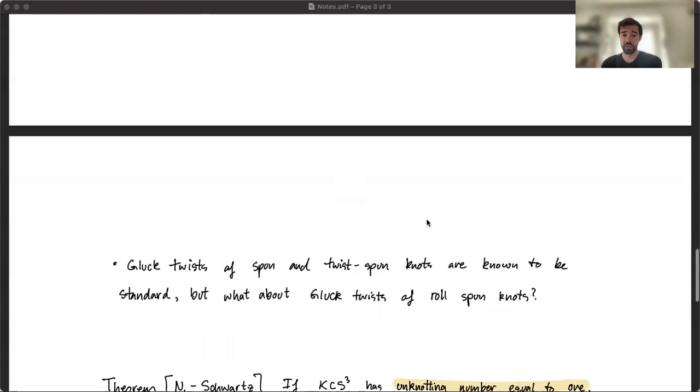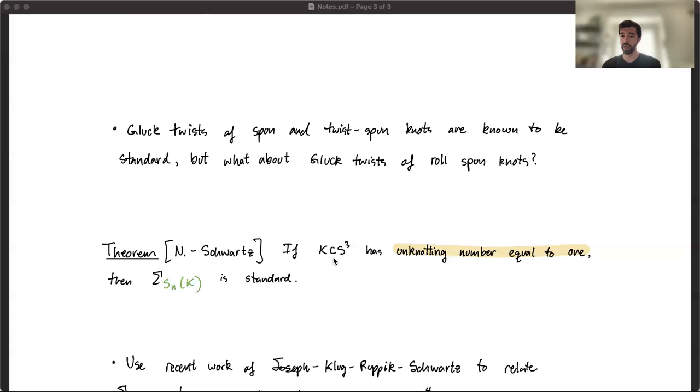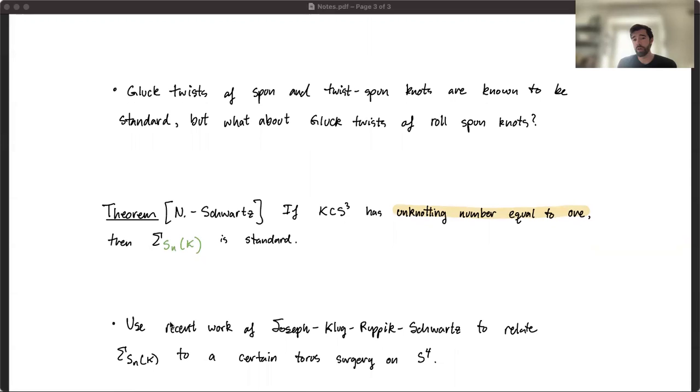So Hannah and I proved the following theorem: If you start with a knot that has a knotting number equal to 1, then the Gluck twist of that roll-spin knot is standard. We actually proved something a little bit more general, but this is what you get in the roll-spin case. And so for our purposes, it's very important that the knot that you start with does have a knotting number equal to 1.